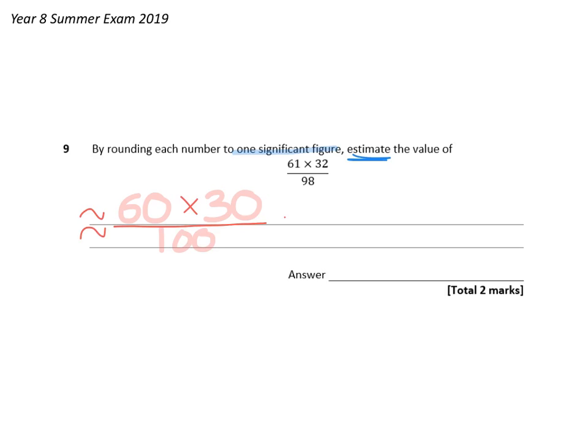So 60 times 30 is 1800, and then we're dividing by 100, and we notice that we can cancel out the zeros to make our life a little bit easier. So that comes out as 18.